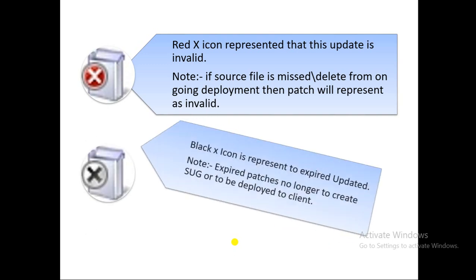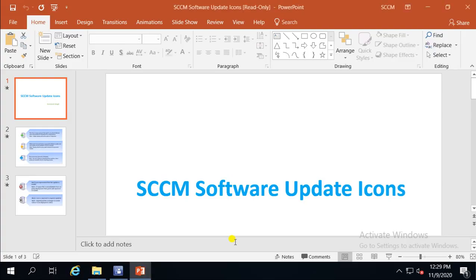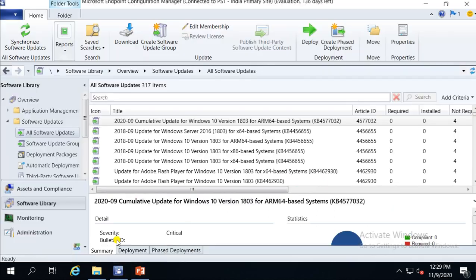The black X icon means the patch has expired. If you see this type of icon, these patches have expired and you cannot deploy expired patches in production. So these are the types of icons available in the SCCM console.